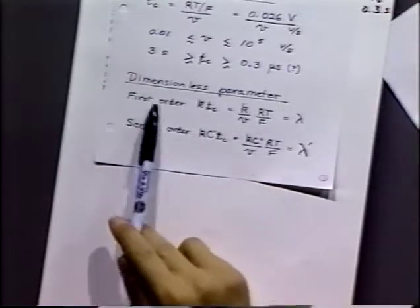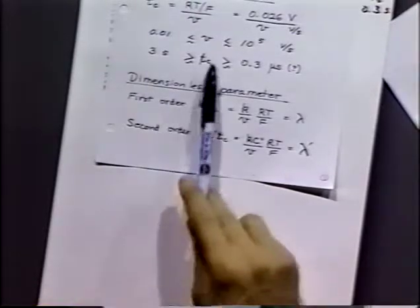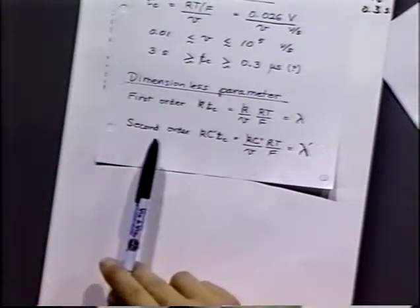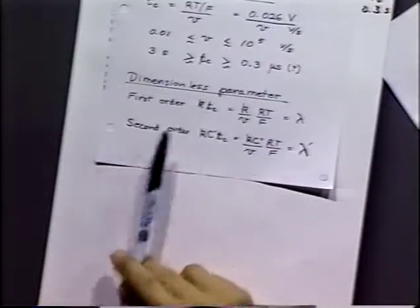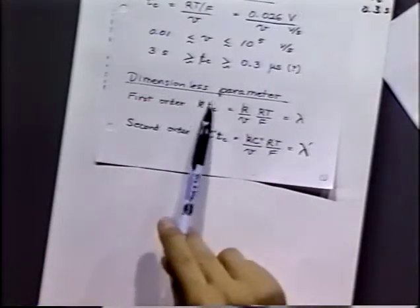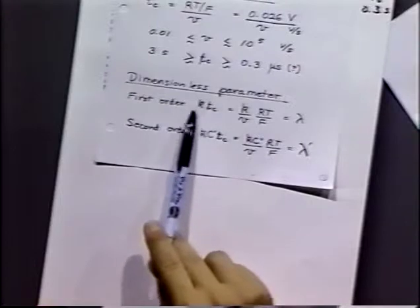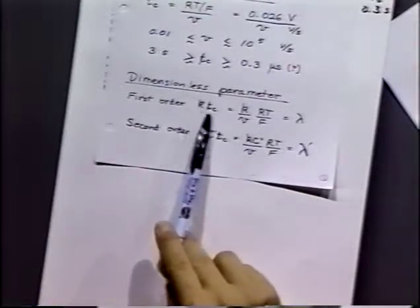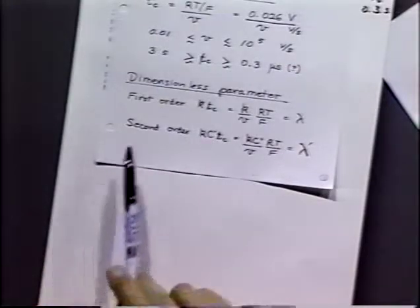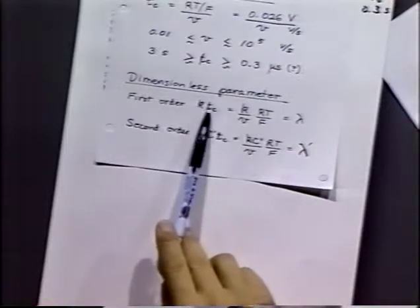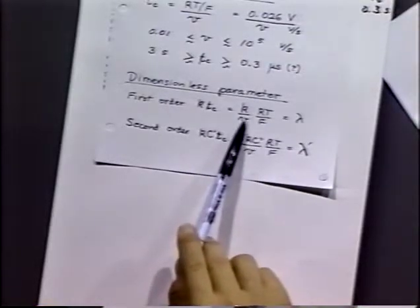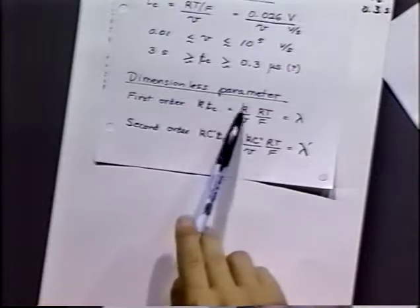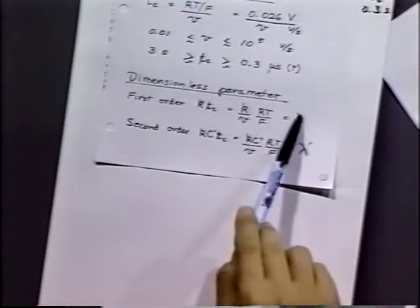When discussing chemical reactions, we want to use dimensionless parameters that combine the timescales of the electrochemical experiment and the chemical process. This gives us unique curves for particular mechanisms. For cyclic voltammetry, T sub c equals RT over FV. Combining the chemical rate constant K with the characteristic time, we define a dimensionless parameter called lambda for first-order chemical reactions.